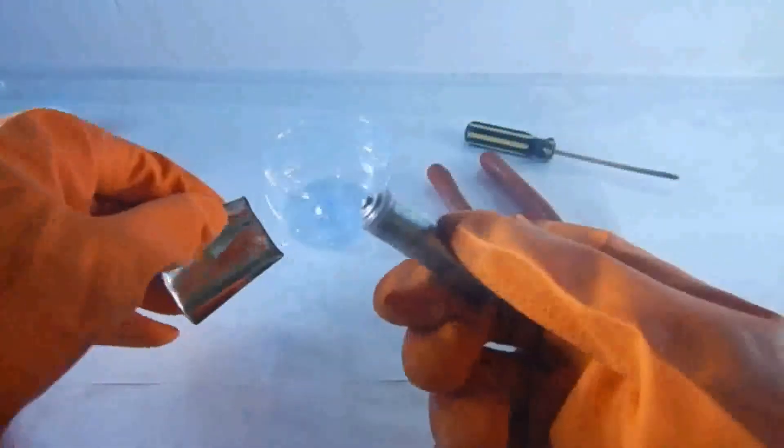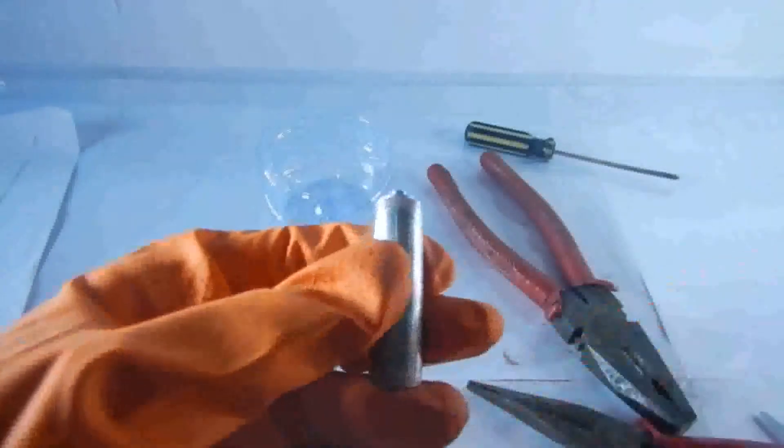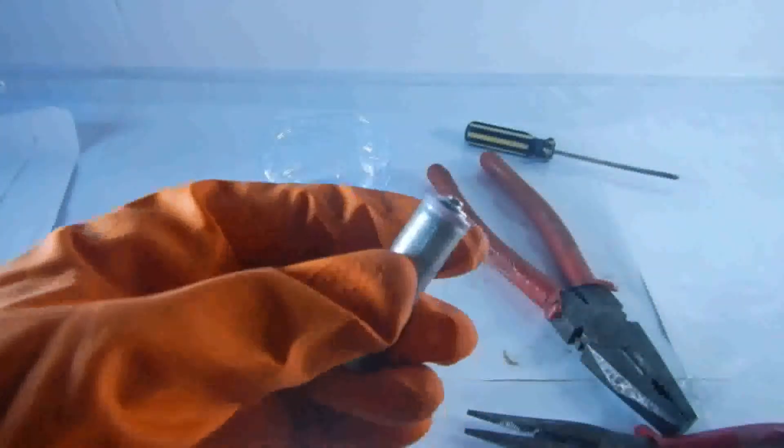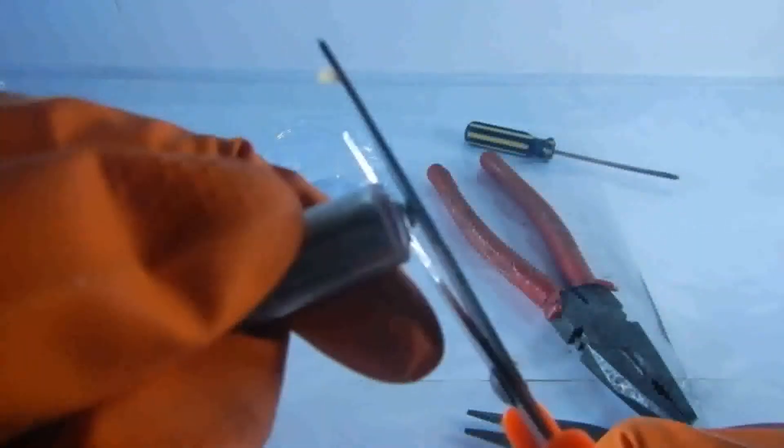And then when it's loose, you're going to get your scissor again and then you're going to cut the wax lining right there.